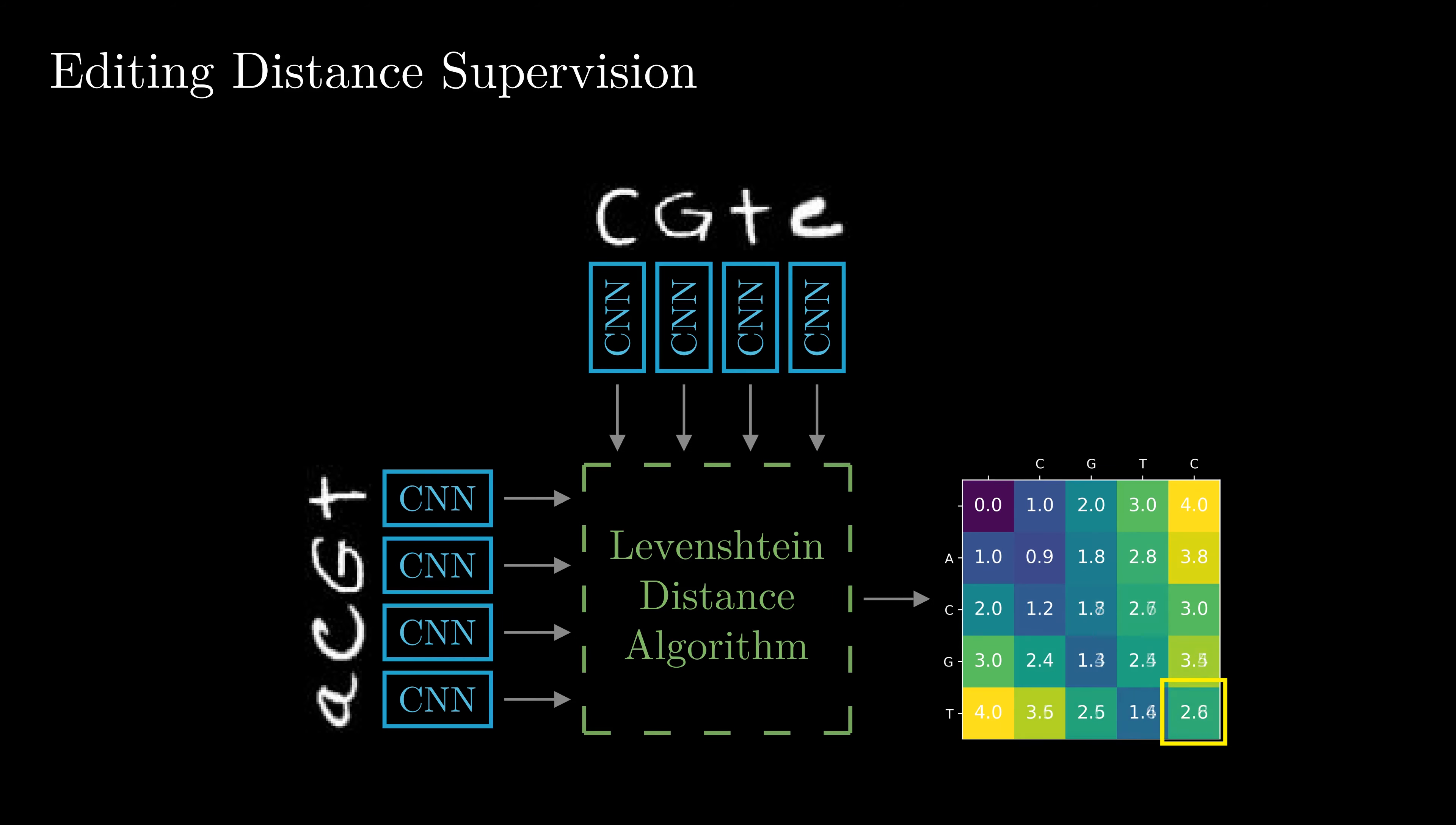This is a setting of extremely low supervision, where we only have a single scalar feedback for pairs of strings of characters. Nevertheless, we achieve reasonable character classification performance on this task by integrating a differentiable algorithm.